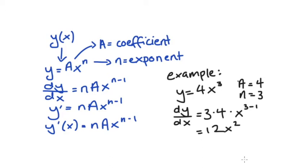Just a note on my notation here: the dot indicates multiplication. I've used this notation because I'm using the variable x and it looks like the multiplication sign, so dots mean multiplication here.